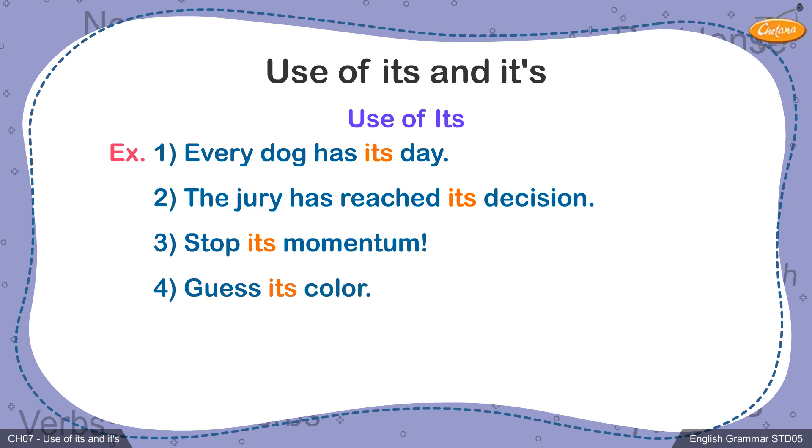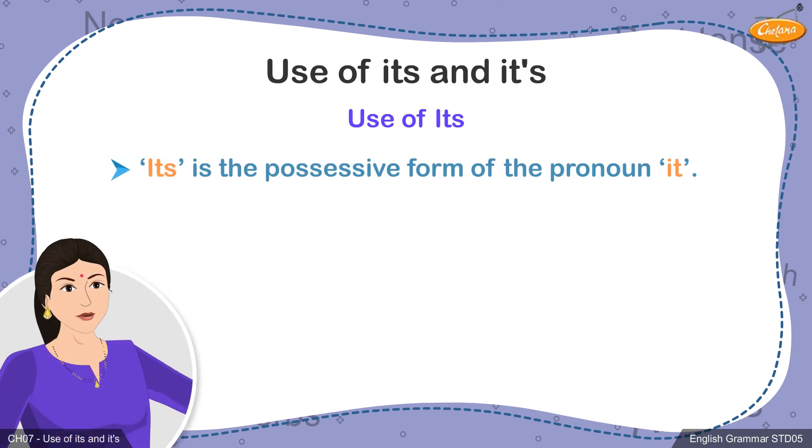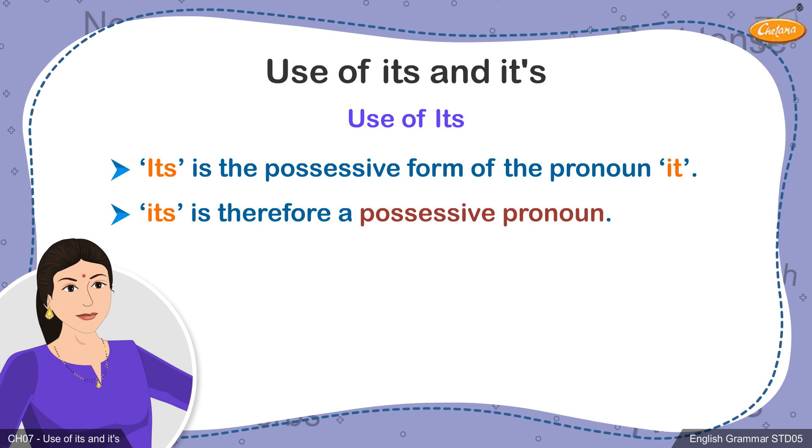Students, you will also notice that its is used to refer to some neuter gender nouns. Since it is used to indicate possession or ownership, the word its is a possessive form of the pronoun it, and it is also a possessive pronoun.